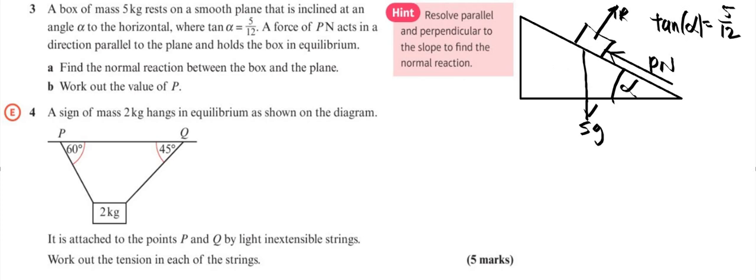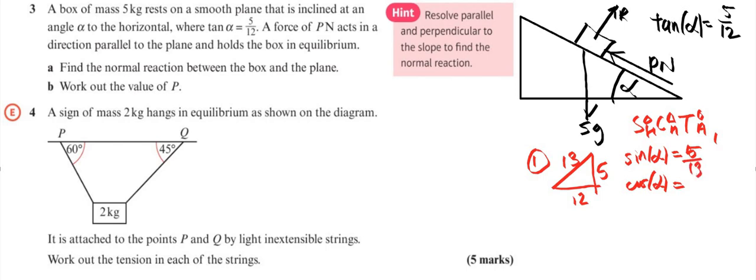We've got tan alpha. So if I've got a right angle triangle, tan is opposite over adjacent. That means that this is 5 and this is 12. 5 squared plus 12 squared, that's 25 plus 144, that's 169. So that's 13. So now I know what sine alpha and what cos alpha are. Sine alpha, that's opposite over hypotenuse, so that's going to give me 5 over 13. Cos adjacent over hypotenuse is going to be 12 over 13.